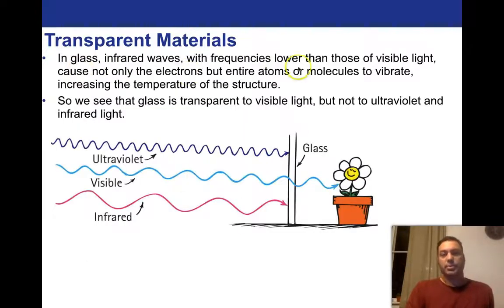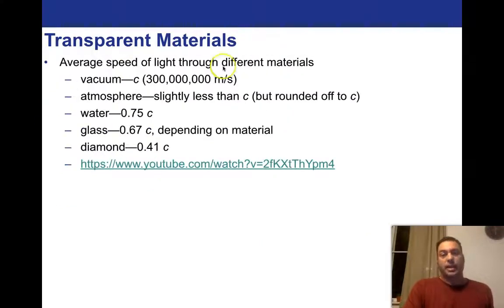So anyways, what does this mean? It means that the speed of light in glass is slower than it is outside of glass in a vacuum. So the speed of light, the constant speed of light, is only constant in a vacuum. And it's constant within the materials, but we just need to be aware that it slows things down. So in glass, infrared waves with frequencies lower than those of visible light cause not only the electrons, but entire atoms or molecules to vibrate, increasing the temperature of the structure. So if the glass has got infrared waves, basically it's going to be vibrating those springs that the electrons are suspended from around the atomic nucleus. So we see that glass is transparent to visible light, but not to ultraviolet and infrared light. So in this case, we've got visible light that'll see the glass and it'll come through. You can see the plant behind it, but the ultraviolet light can't get in and the infrared light cannot get in. So in this way, glass is actually acting like a filter.